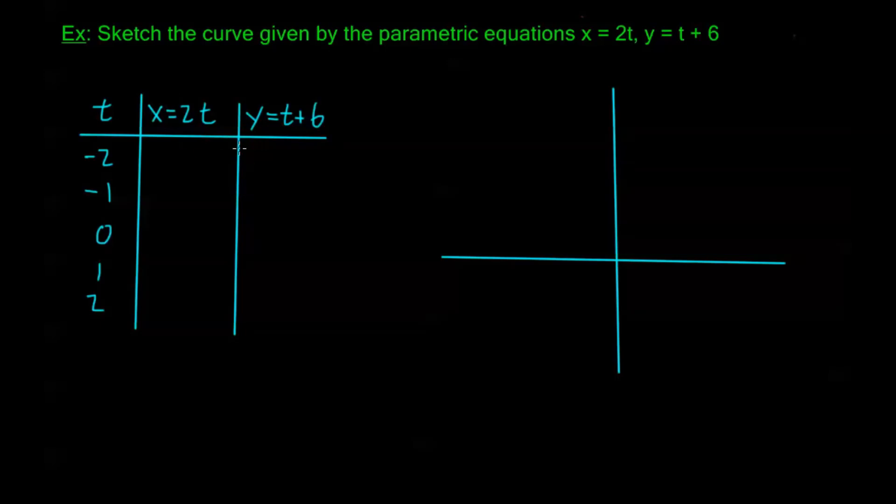So if I plug in t equals negative 2, my x is negative 2 times 2, or negative 4. If I plug in t as negative 1, I get negative 2. If I plug in t as 0, I get 0. And because of this parametric equation for x, we see every time t increases by 1, x is increasing by 2. So I can just fill in the rest of this. This is 2, 4.